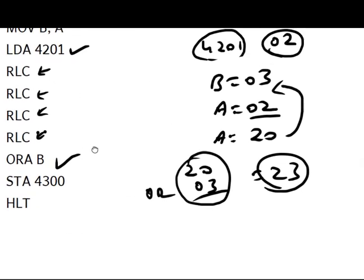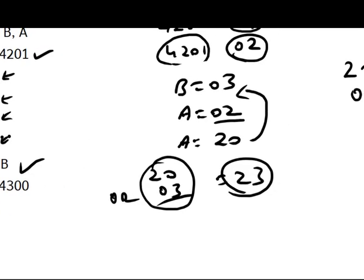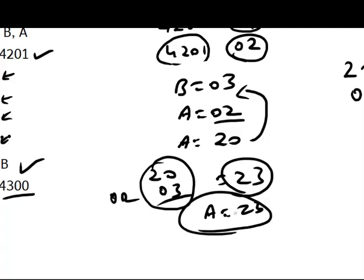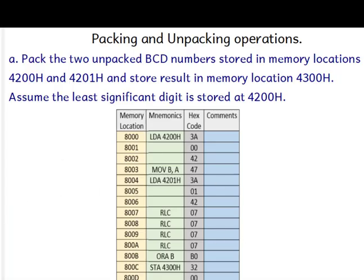The answer 23 is in register A. Since the problem requires us to store the result at 4300h, the instruction STA 4300 stores the data from register A into memory location 4300, so 4300 becomes 23. That is the packed result.